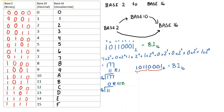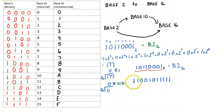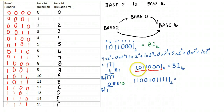Let's make up another example. What I'm going to do deliberately this time is take the number 1, 1, 0, 0, 1, 0, 1, 1, 1, 1, 1 in base 2. That's 11 bits, and what I've done deliberately here is picked a number of bits that's not divisible by four.